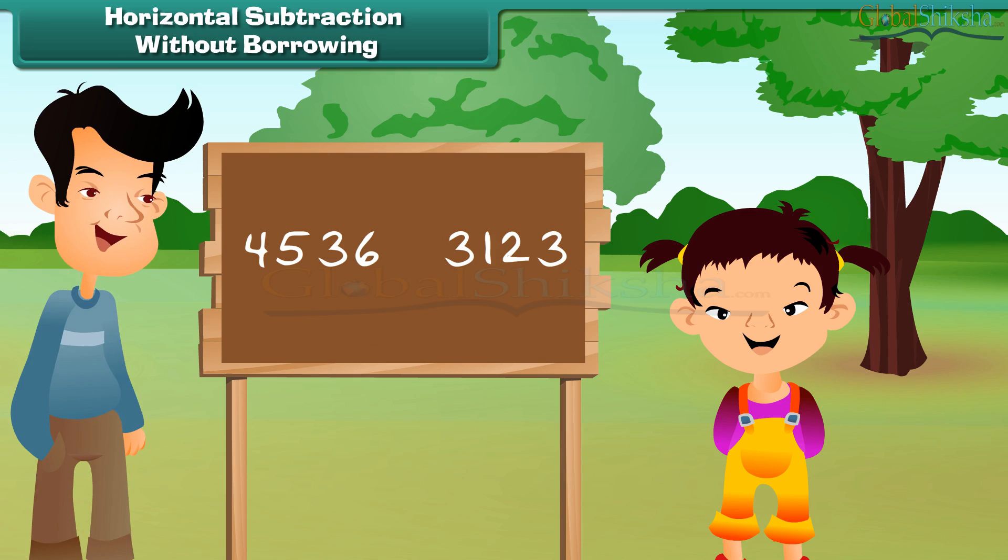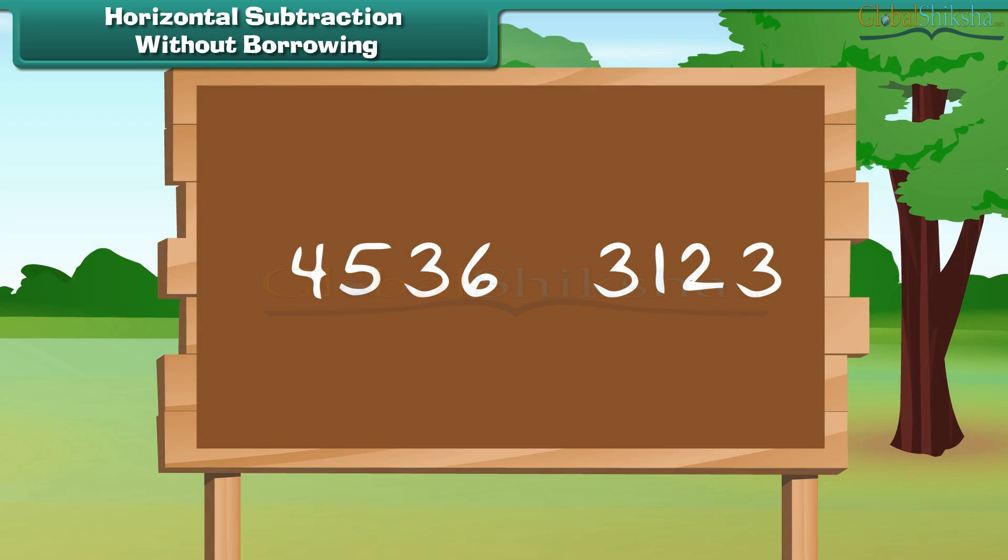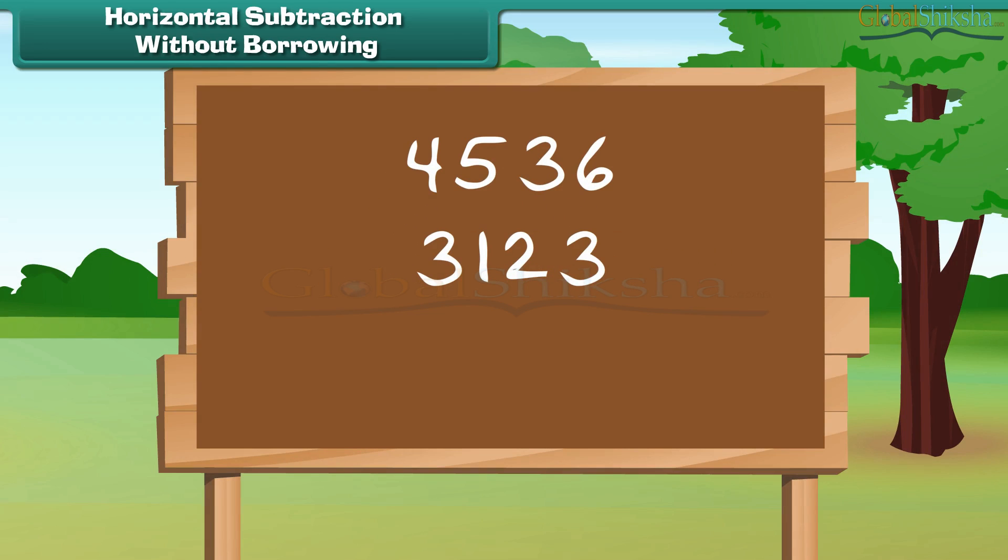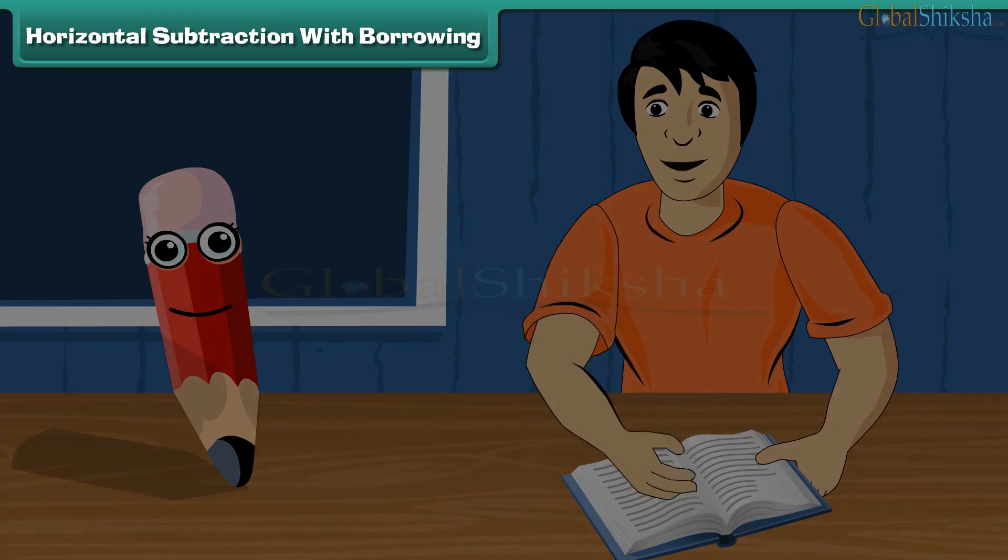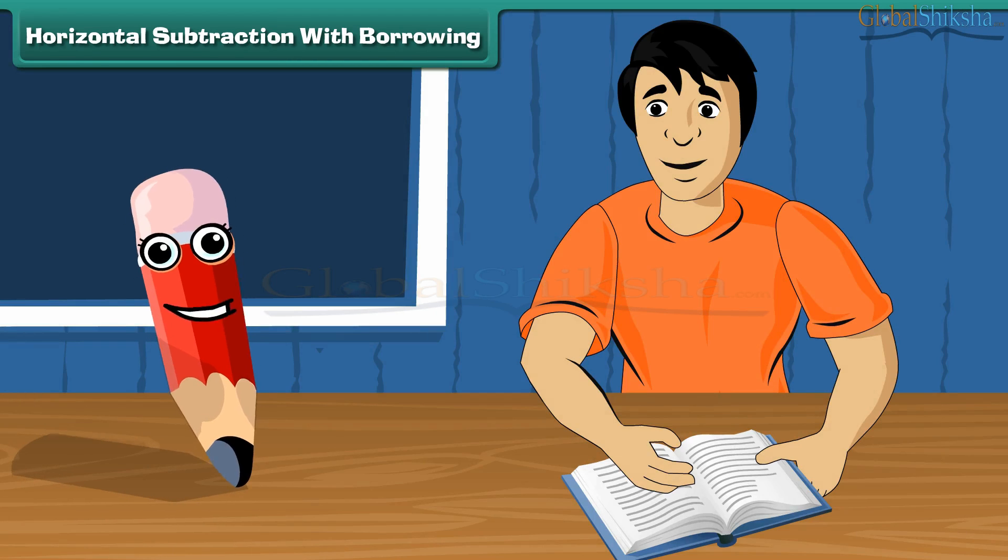Let us now move on to subtraction. Wendy went to a picnic last Saturday. The picnic spot had 2 boards with 2 different numbers written. Let us look at the numbers: 4536 and 3123. Her father asked her to tell the difference between the numbers. Let us help her.